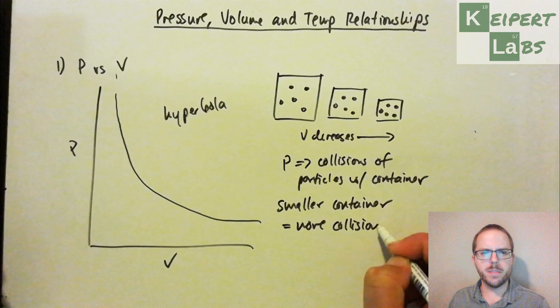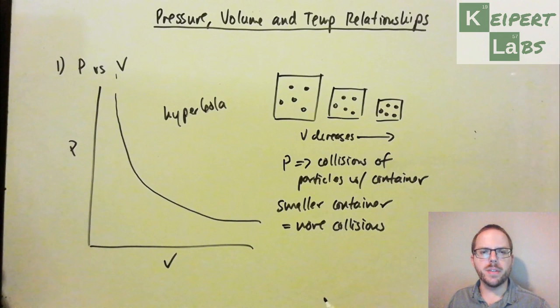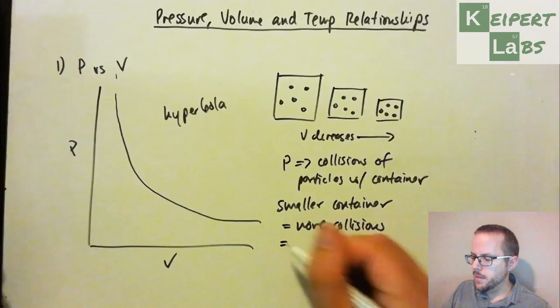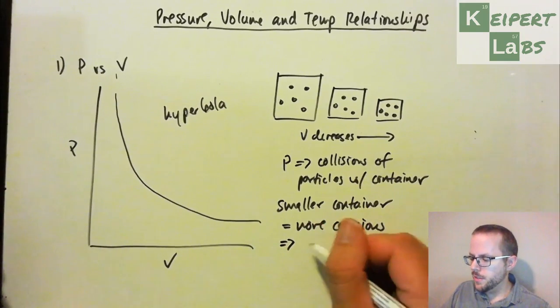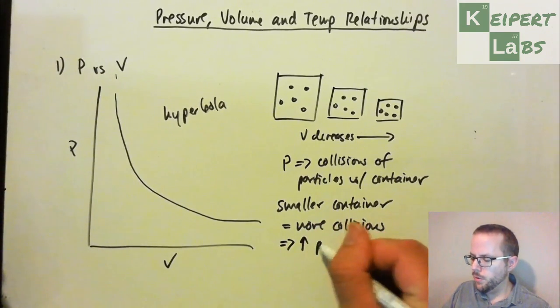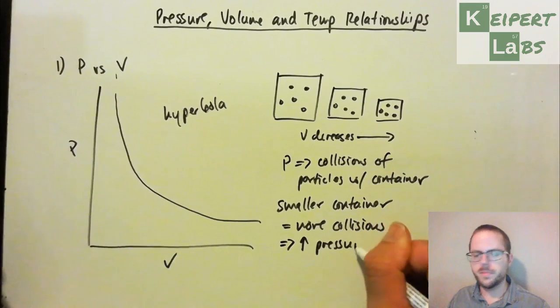It's like if you took a room full of people, and then you just progressively made the room smaller and smaller and smaller. They're more likely to bump into each other, and they're more likely to hit the walls as well, because you haven't taken any people out. So that means, by getting more collisions, we get greater pressure.